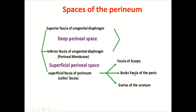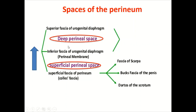Now understanding the layers, we can identify the spaces. Proceeding from skin, superficial fatty layer, and deep membranous layer (Colles' fascia), we then encounter the perineal membrane — also called the inferior fascia of the urogenital diaphragm. The space between Colles' fascia and the perineal membrane is the superficial perineal space. The space between the perineal membrane and the superior fascia of the urogenital diaphragm is the deep perineal space, which constitutes the urogenital diaphragm — a partition in the perineum.